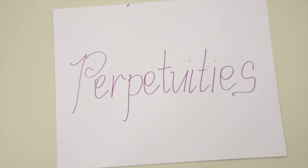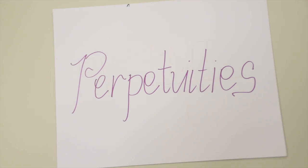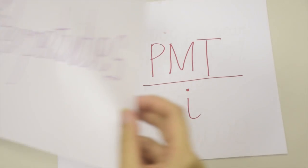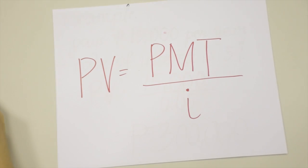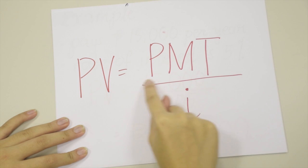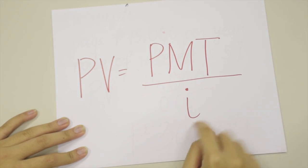So now let's move on to perpetuities. Suppose you will receive a fixed payment every period — every month, every year, etc. — forever. This is an example of a perpetuity. The present value of a perpetuity is equal to the periodic cash payment divided by the interest rate.